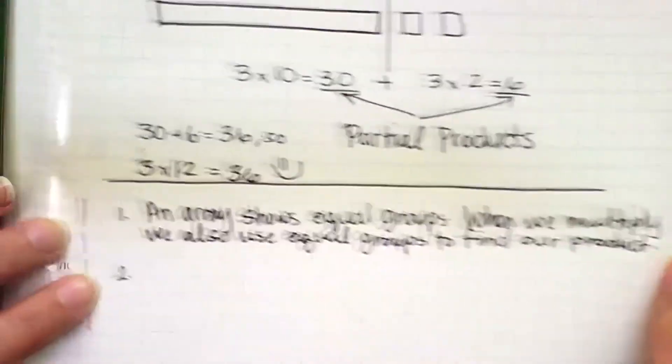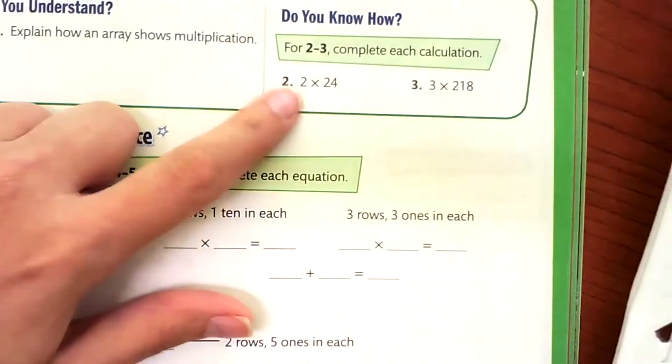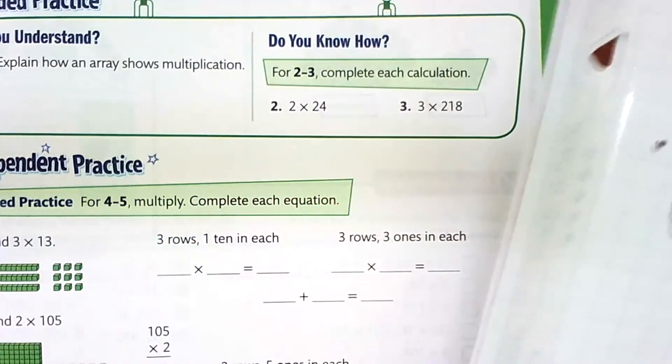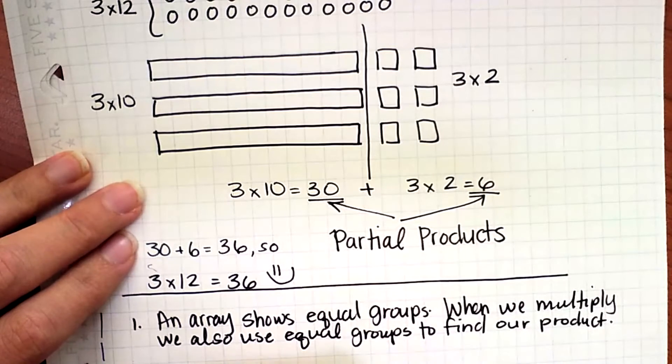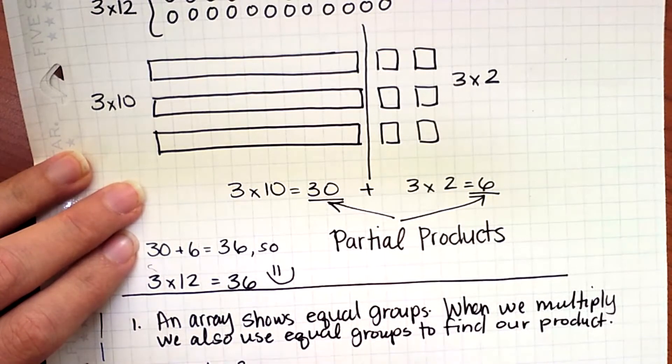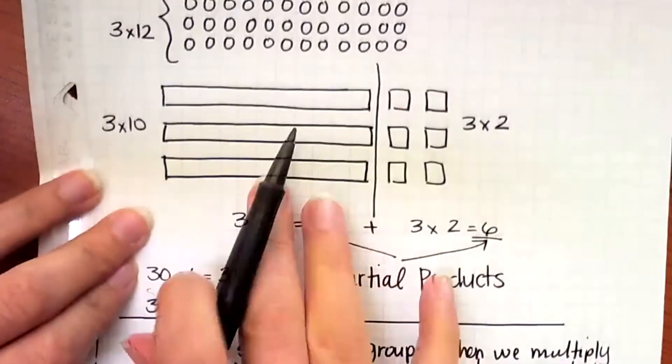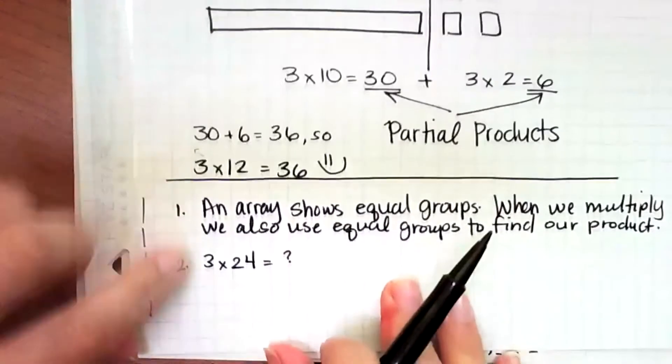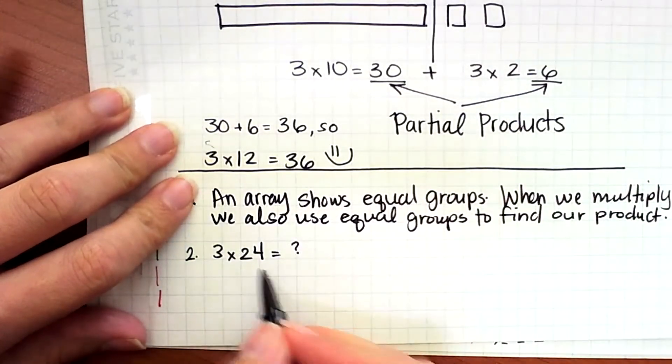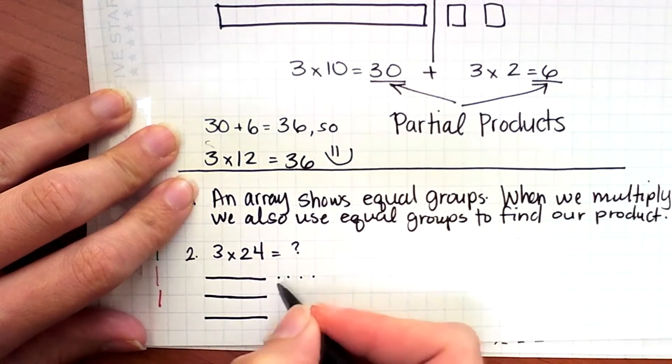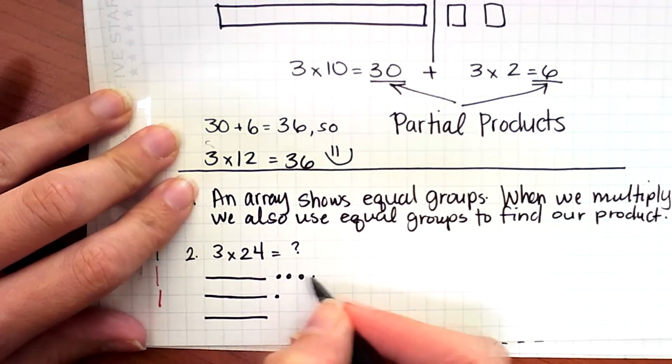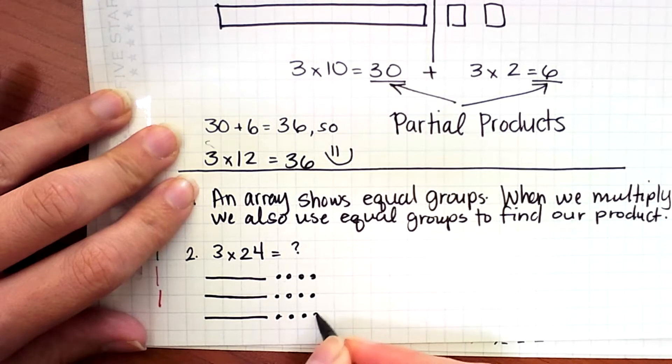For number two and three, complete each calculation. We have 3 times 24 and then 3 times 218. Our first one is 3 times 24. What we learned was we split the 10s and the ones. So 3 times 24, I can have 3 groups with 24. Instead of drawing out the whole rods, I'll just do the lines and the dots to show my 24.